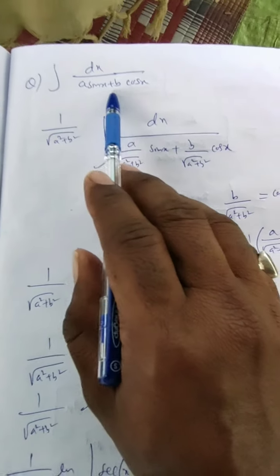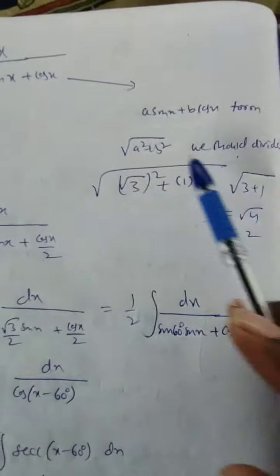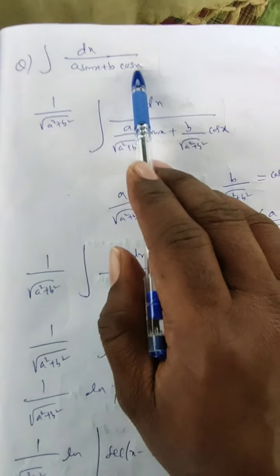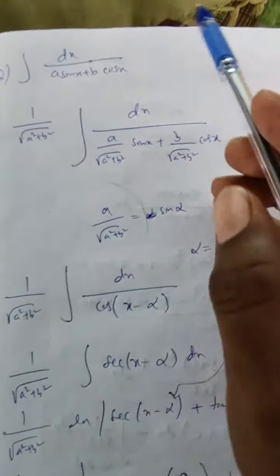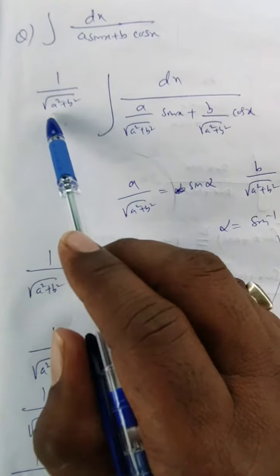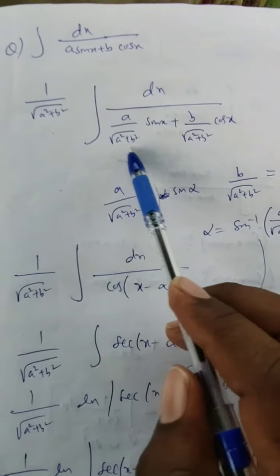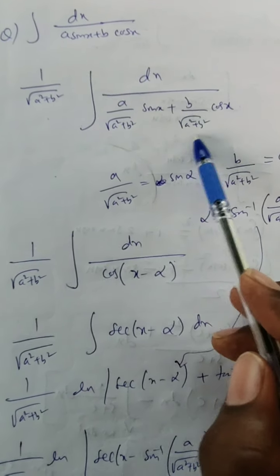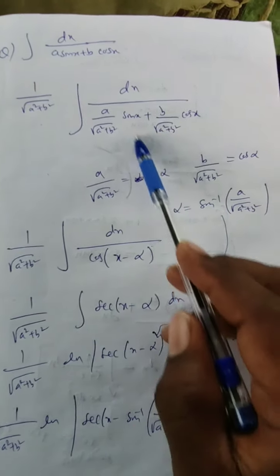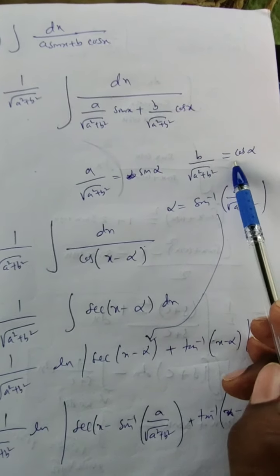Now let us consider the general case: integration of dx / (a sin x + b cos x). Whenever you have a sin x + b cos x, you multiply and divide by √(a² + b²). After dividing, you get a/√(a² + b²) · sin x + b/√(a² + b²) · cos x. We let a/√(a² + b²) = sin α and b/√(a² + b²) = cos α for some angle α.